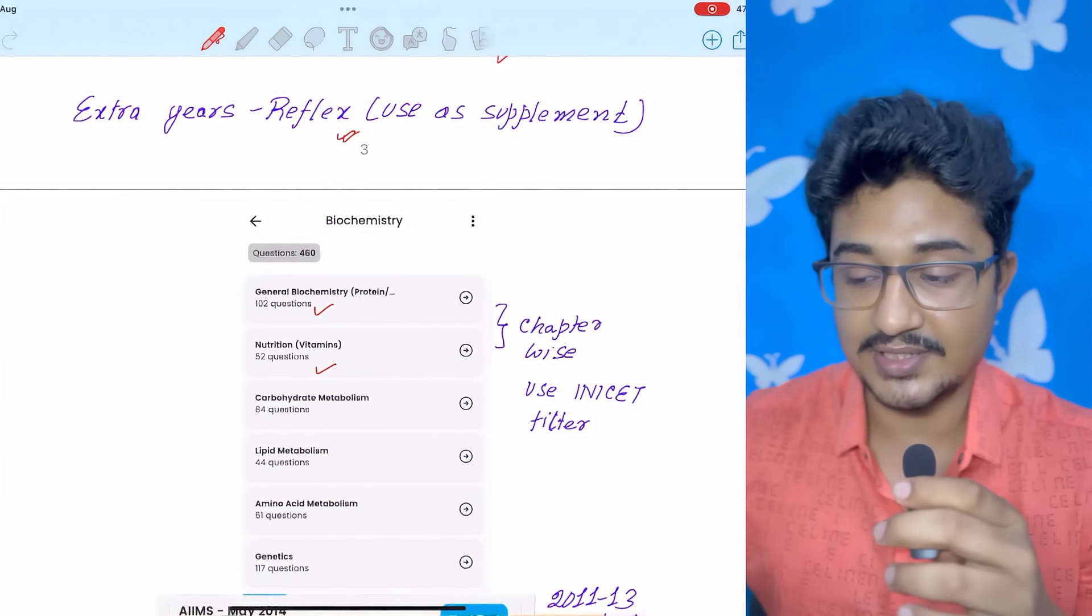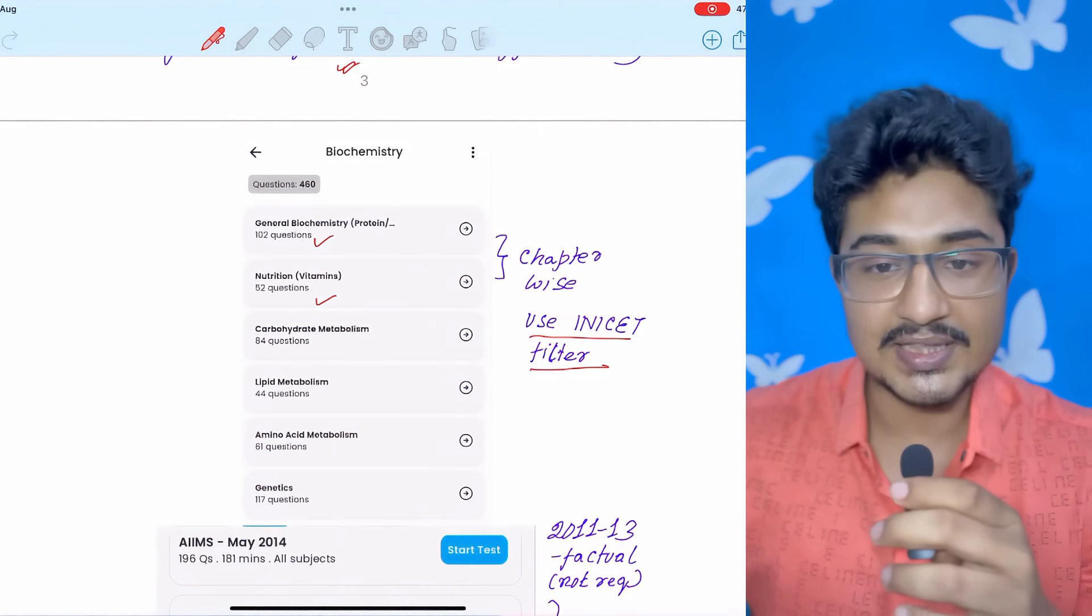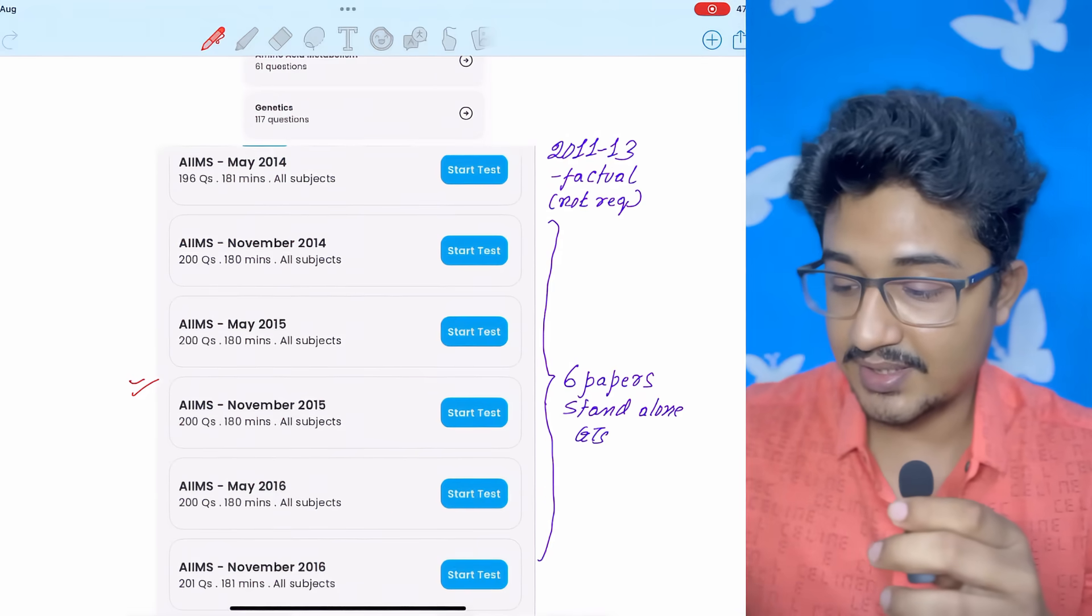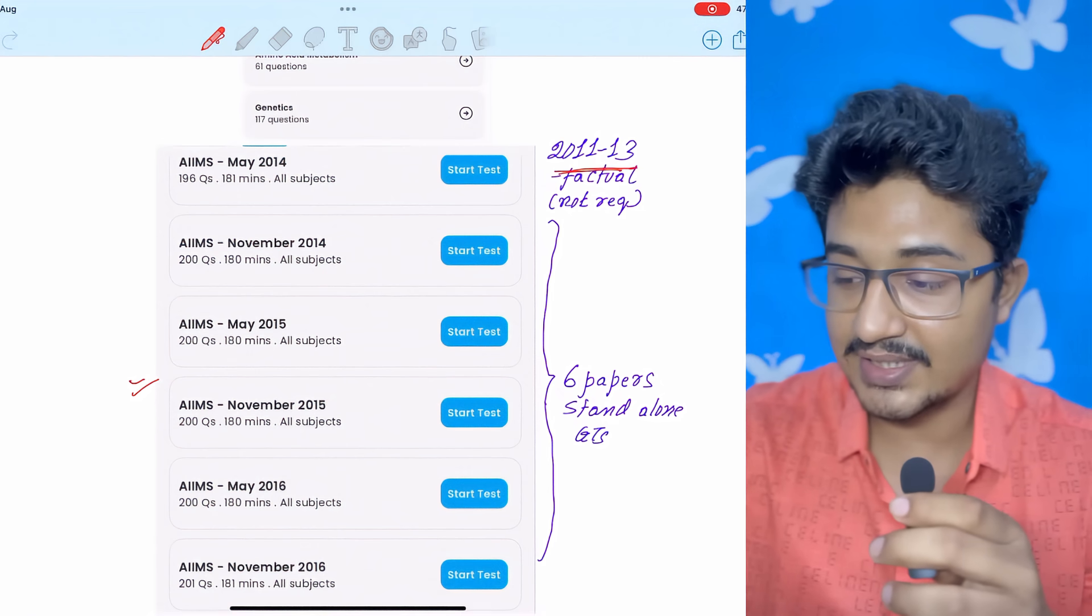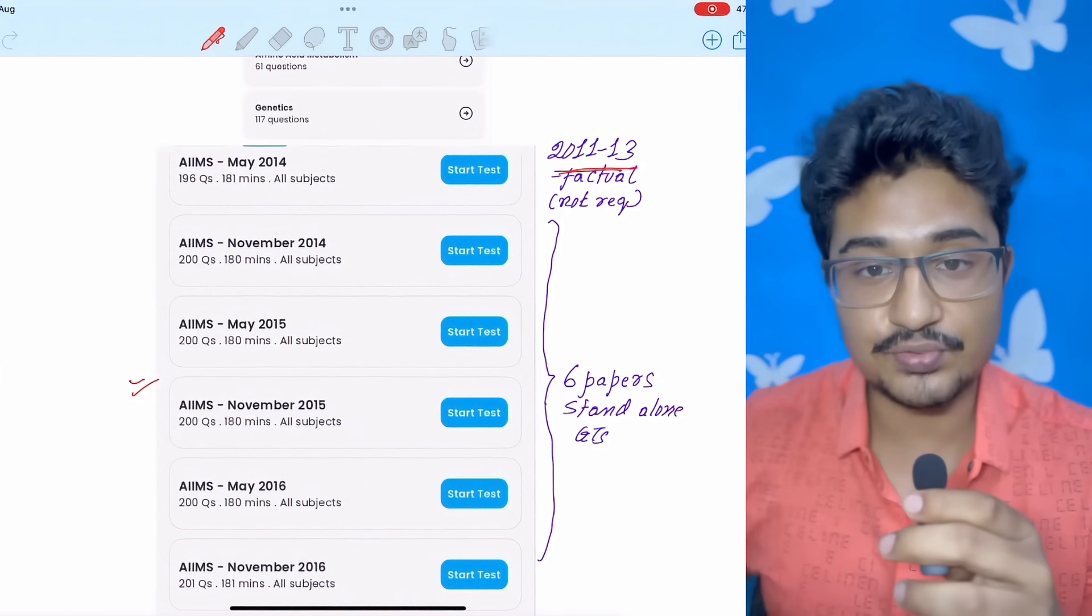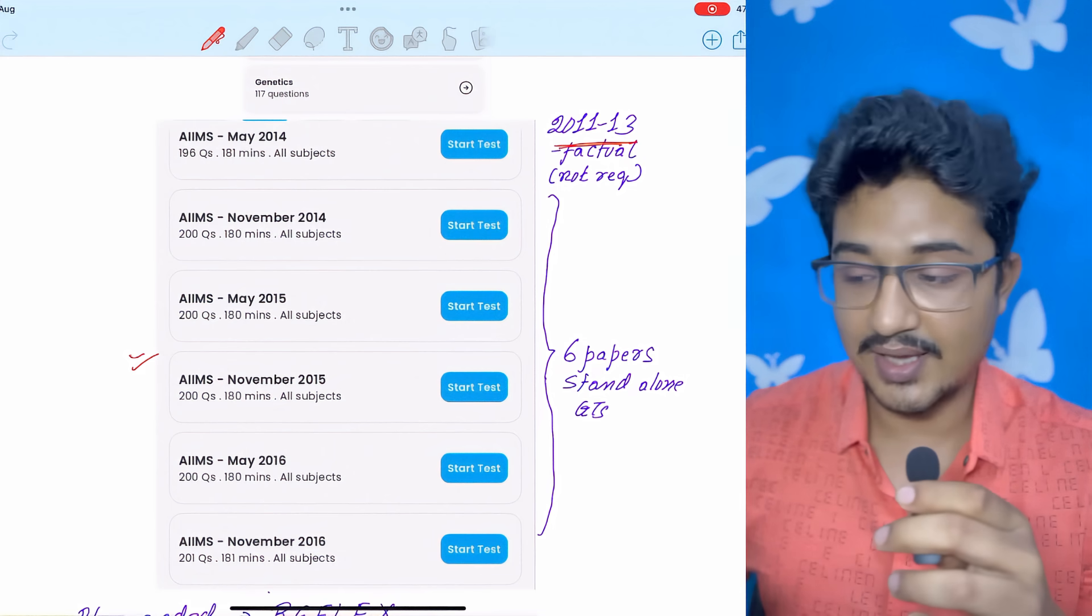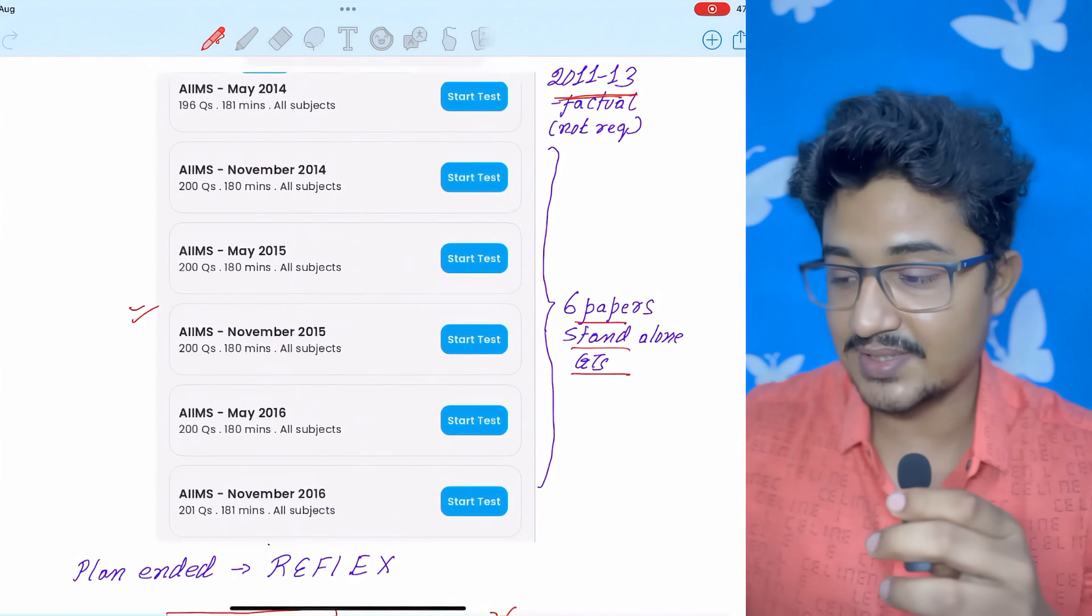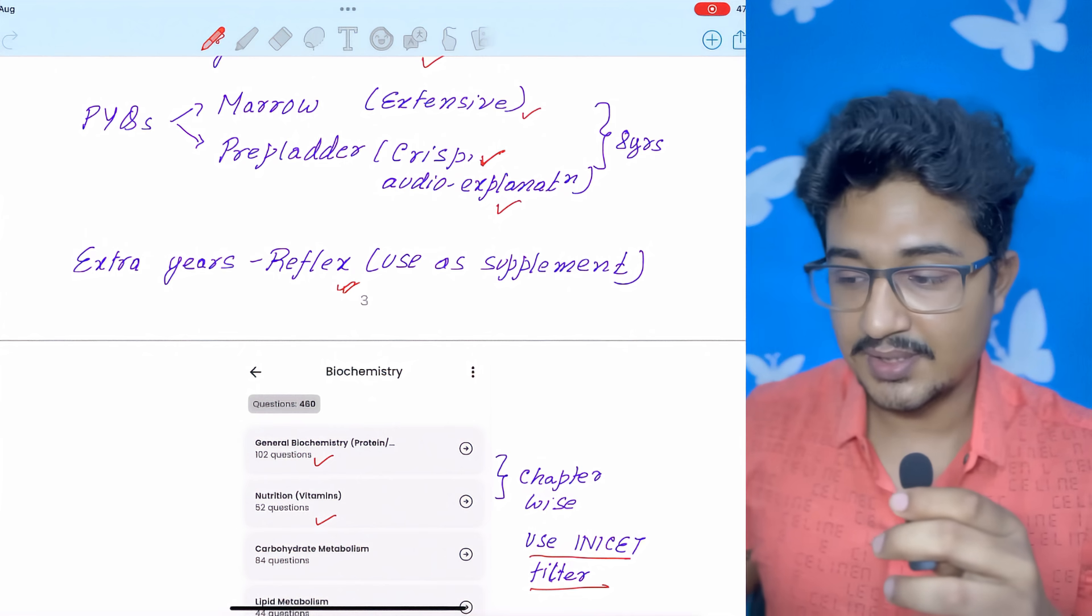You can use MCQs. But use the INICT filter. NEET PG and FMG is not so important for the INICT perspective. And like I said, I am not advising you to give because it was the older AIMS pattern question where factual questions used to come. But from 2014 onwards, the new AIMS pattern has started and more and more conceptual questions are asked, like the recent patterns. So you can give these six papers as standalone GTs also. And Reflex, as I have said, it is not good for sole source as a supplement.